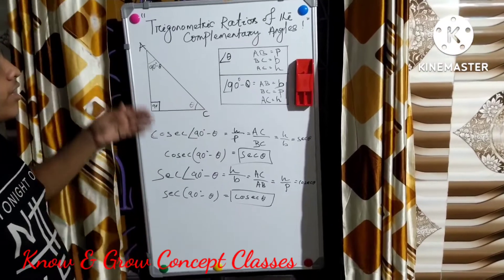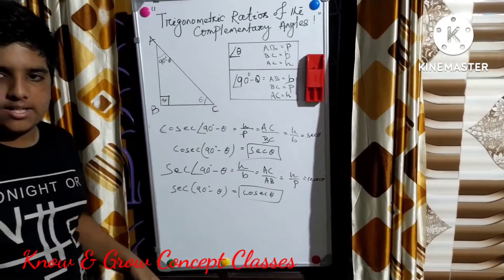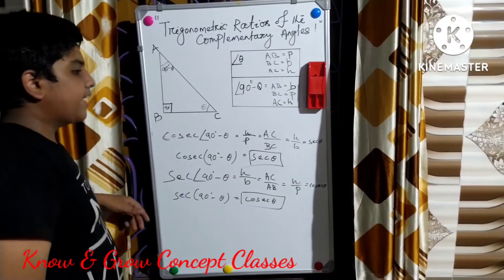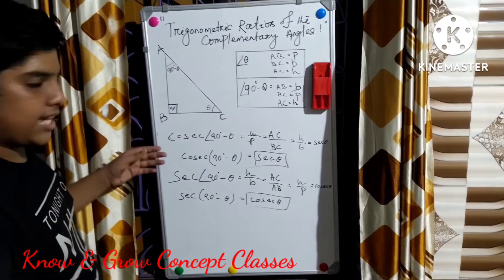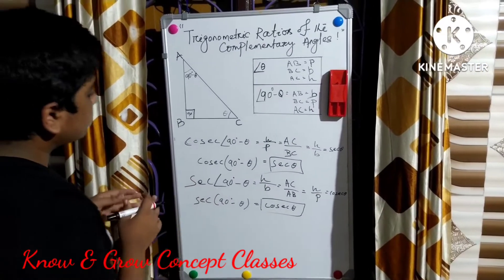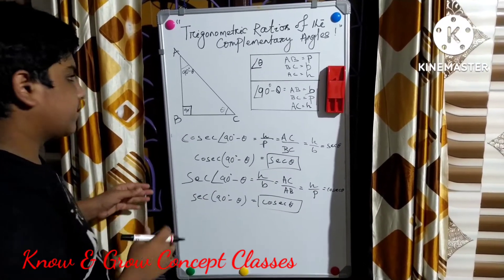So here we have obtained all the complementary angle formulas: sin(90° - θ) = cos θ, cos(90° - θ) = sin θ, tan(90° - θ) = cot θ, cot(90° - θ) = tan θ, cosec(90° - θ) = sec θ, and sec(90° - θ) = cosec θ.